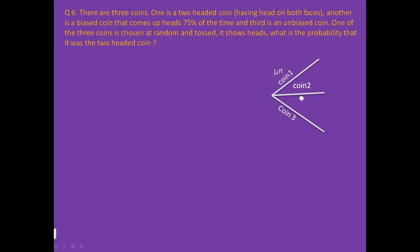So, the first coin has two heads on both sides. The second one is biased coin. And the third coin is unbiased, so it has equal probability of head or tail.